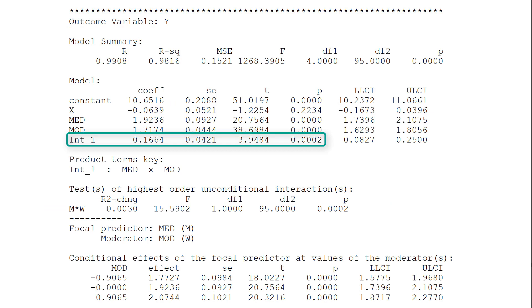And to the model for the B path. Here we are primarily interested in the interaction between mediator and moderator, because if that's significant, we have a moderation for the B path.